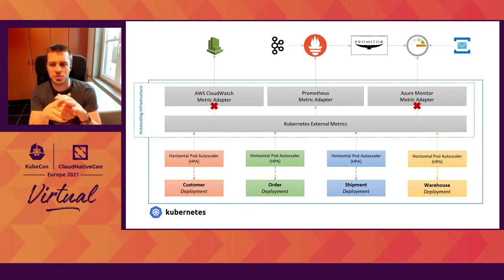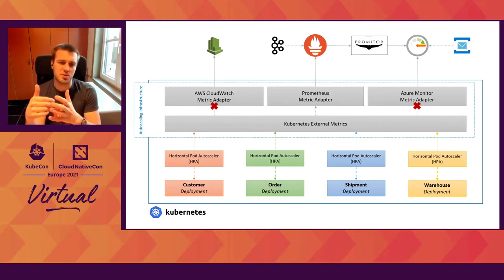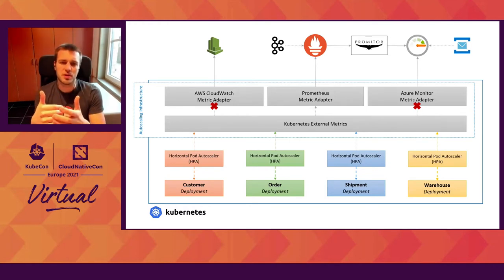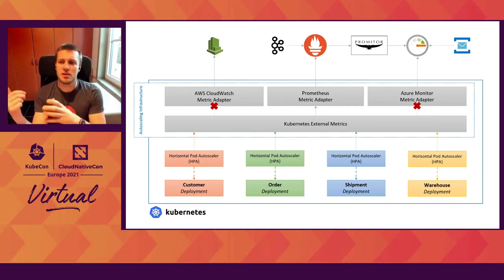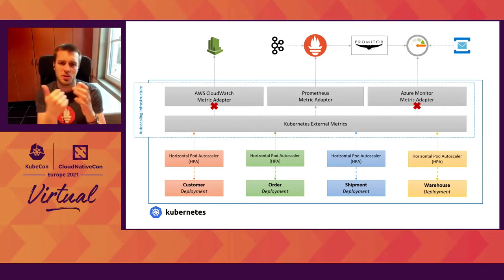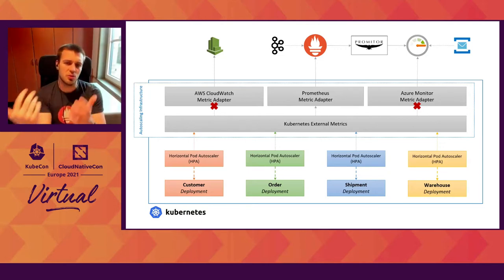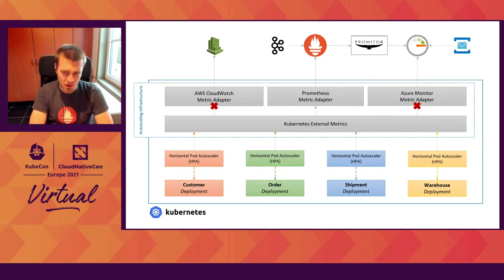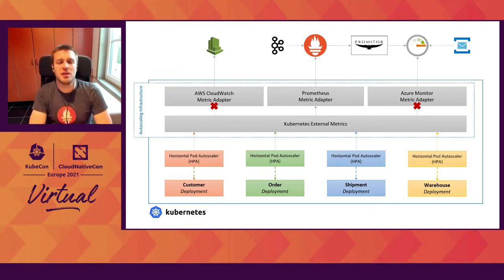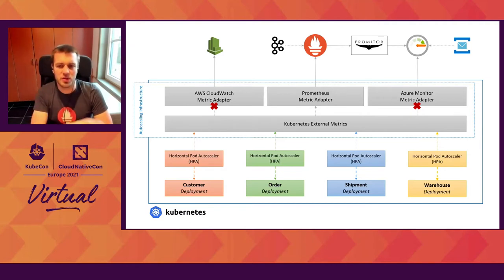So in this case, imagine you want to autoscale on Prometheus, Kafka, and Azure Monitor. What you could do is send all metrics from Kafka to Prometheus, and send all metrics from Azure Monitor to Prometheus by using a tool like Prometheus. Now, all of this is a bit much, and we with KEDA figured we can make this a lot simpler so that you don't have to worry about all of this autoscaling infrastructure.